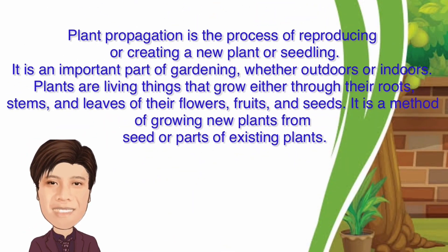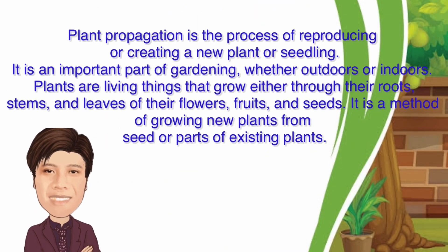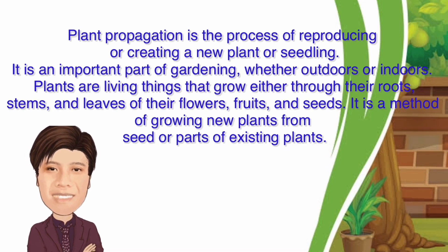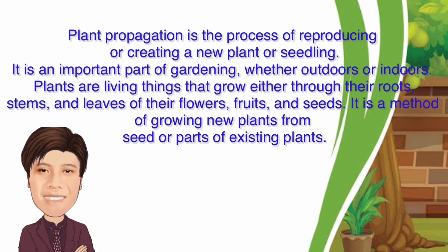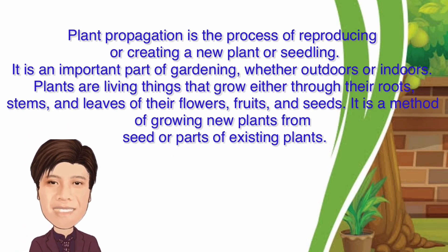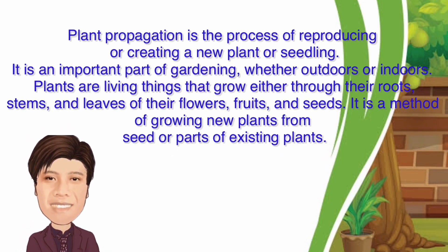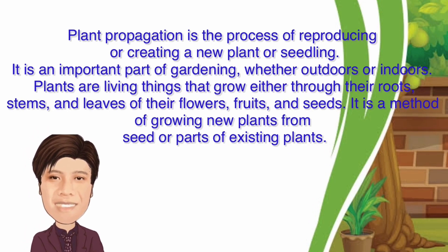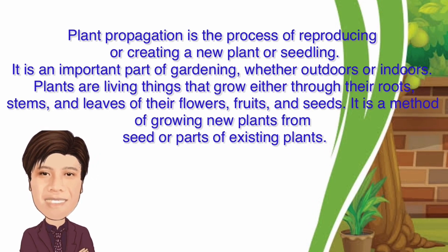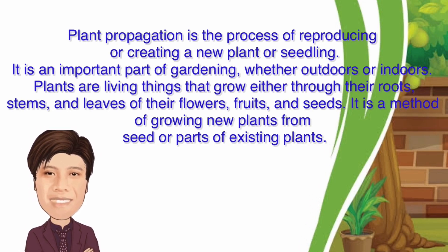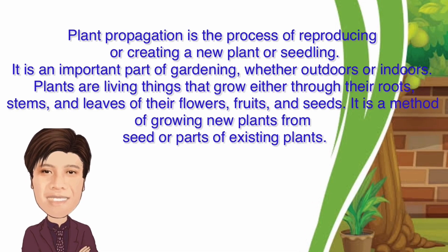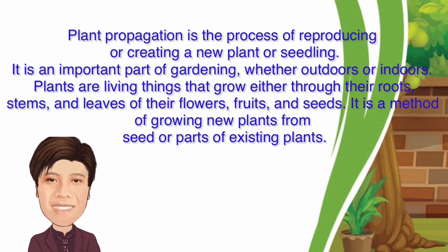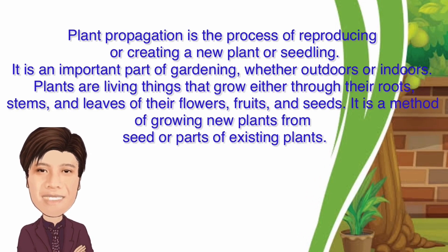Plant propagation is the process of reproducing or creating new plants or seedlings. It is an important part of gardening, whether outdoor or indoor. Plants are living things that grow either through the root, stem, and leaves or their flowers. It is a method of growing new plants from seeds or a part of existing plants.